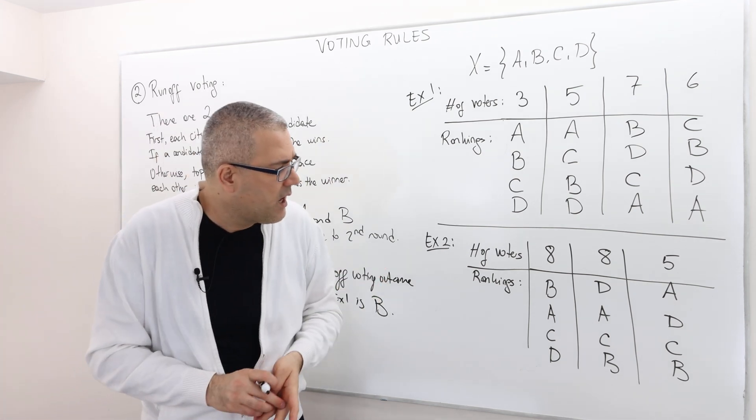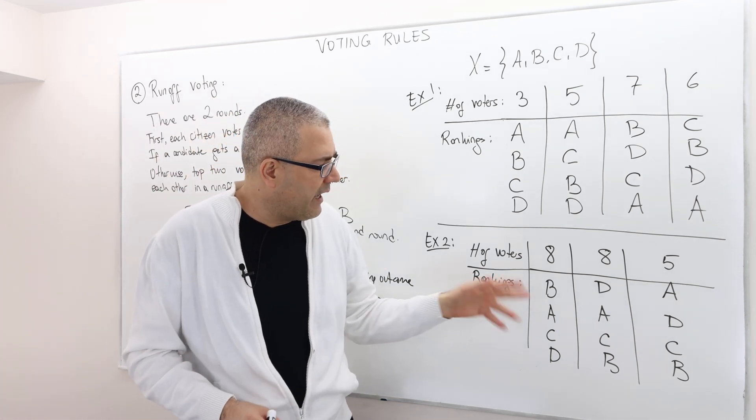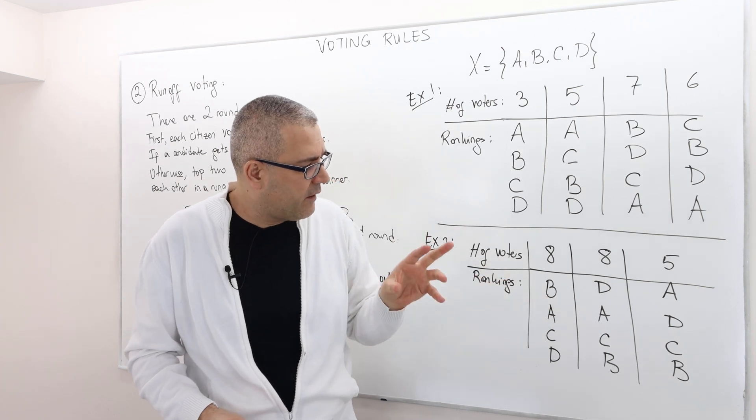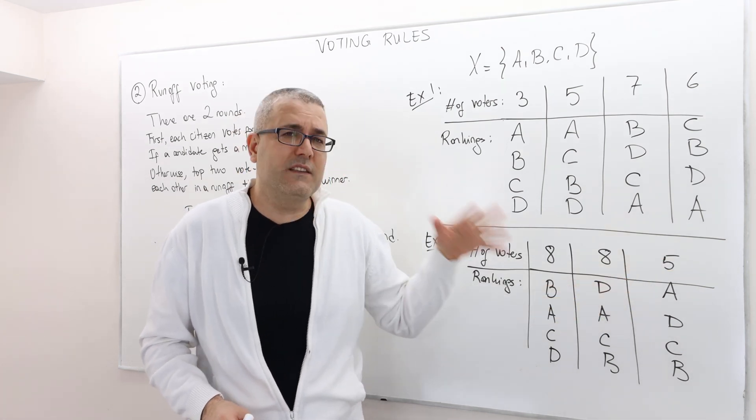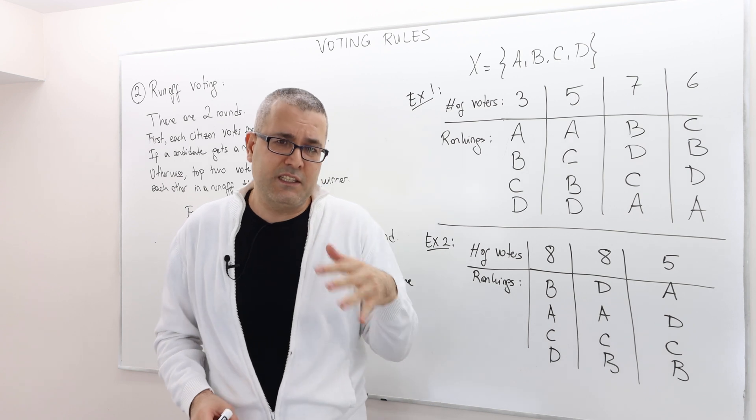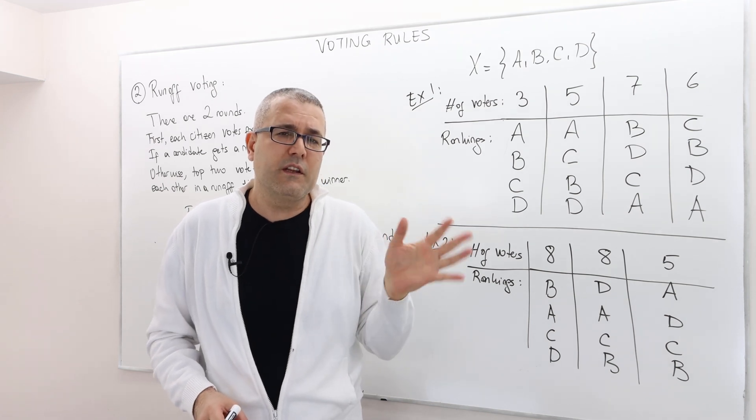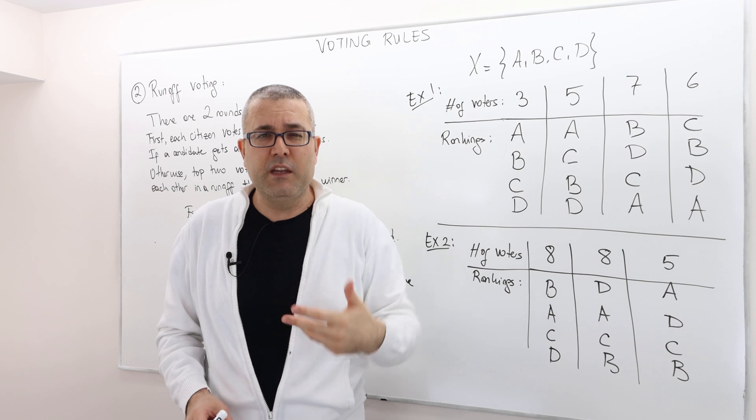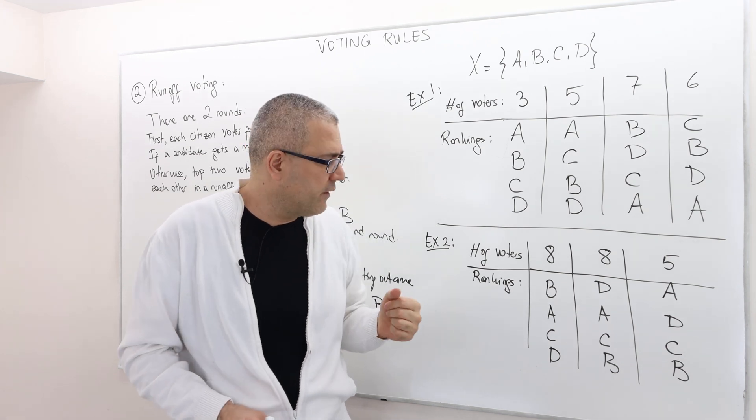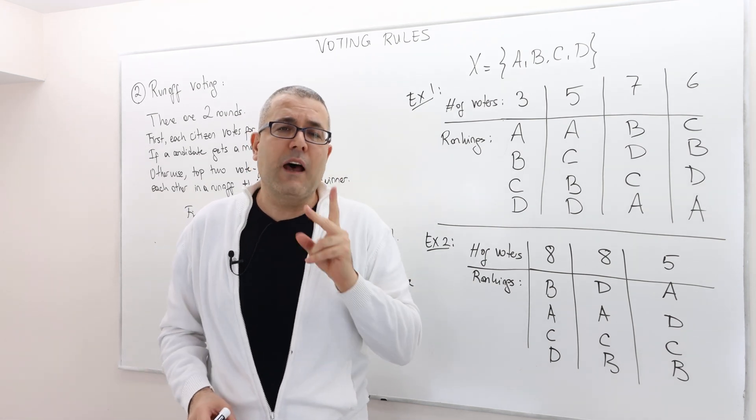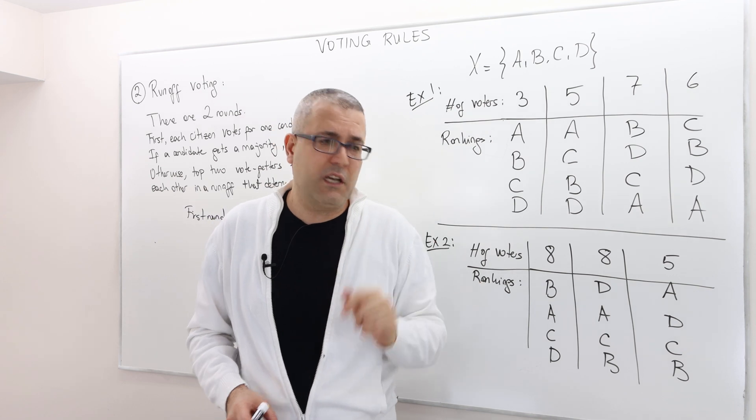In example two, what happens? In the first round, B is going to get eight votes, A is going to get five, D is going to get eight, C is going to get zero votes. So therefore, there's going to be no majority winner. We need to have at least 11 votes. So the top two candidates are going to move to the second round.